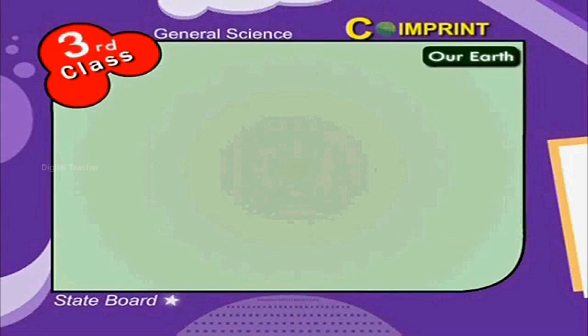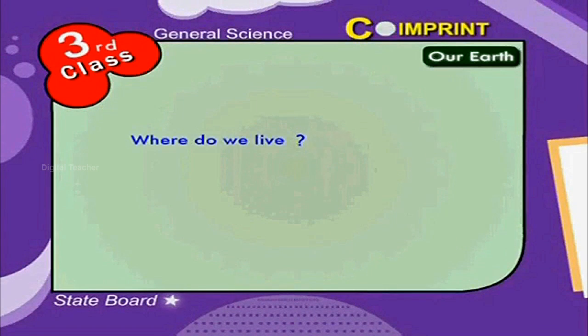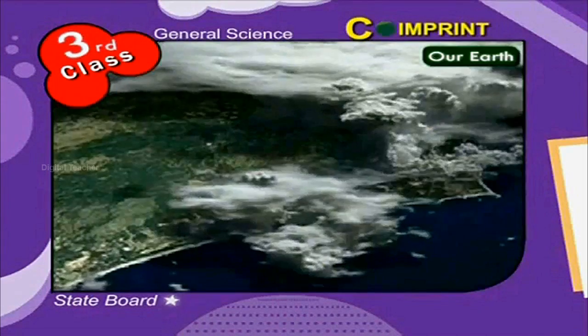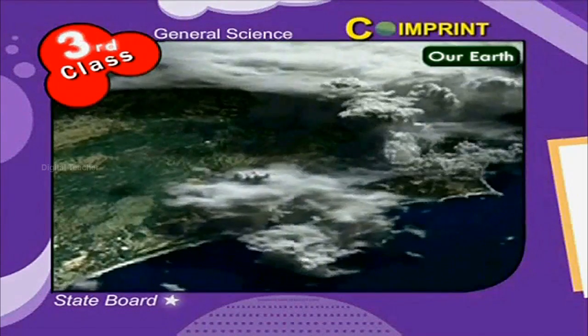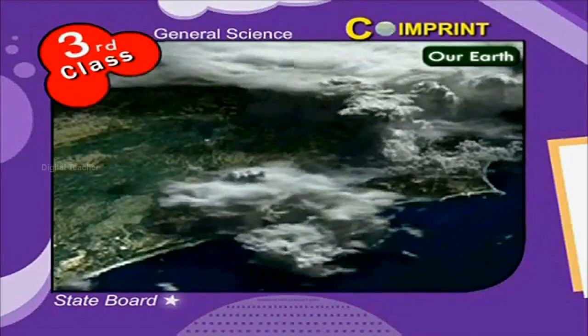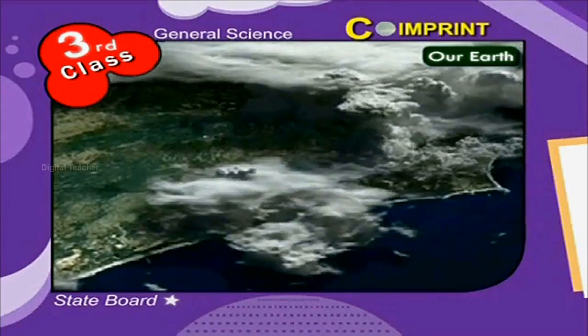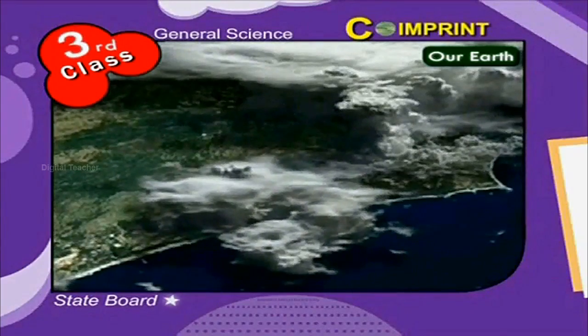Our Earth. Where do we live? What is around us? We can say that we are on the Earth along with plants and animals around us.